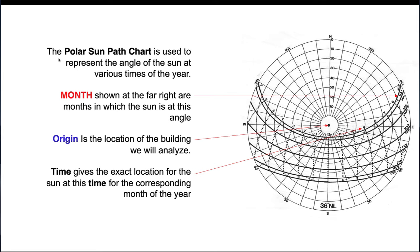Let's do a breakdown of this chart. The months are shown on one side — importantly, months are paired together because the sun angle is the same for those two months, so August and April share the same sun angle. Along another line we have our times, ranging from 6 a.m. to 7 p.m. The origin represents our building in plan view, so we can determine where the sun will be and how it affects the building for different times and months. Make sure you're using the correct latitude — ours is 36 degrees for this location.